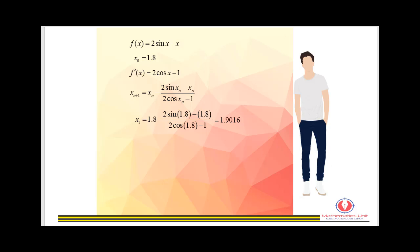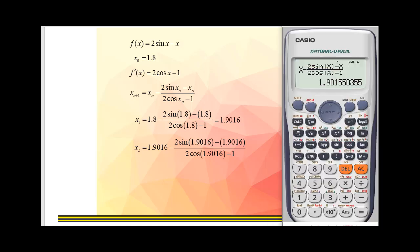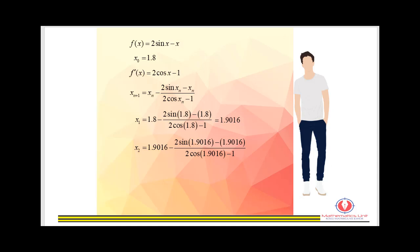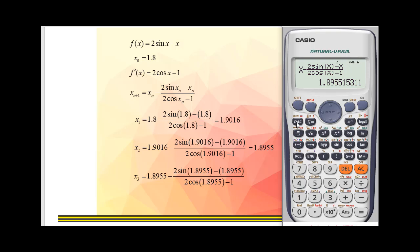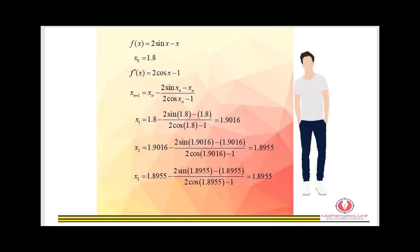Note: we must write intermediate answers correct to more than three decimal places, since the final answer must be rounded to three decimal places — we don't want to round off too early. Computing x sub 2 gives 1.8955. Computing x sub 3 also gives 1.8955. We have two consecutive same values, so we conclude that the root is x = 1.896.